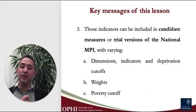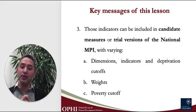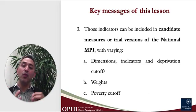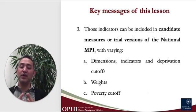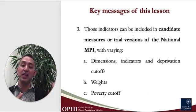A second way in which trial measures may differ is the weight assigned to each dimension and its indicators. One trial measure, for example, can assign equal weights to each dimension, reflecting the fact that they are all considered to be equally important, whereas another one may assign a weight to education that is twice the weight assigned to the health dimension, reflecting the fact that education has a greater relative importance compared to health.